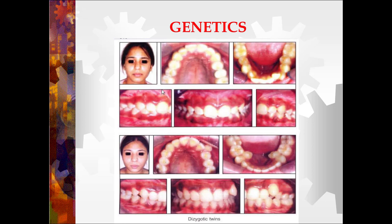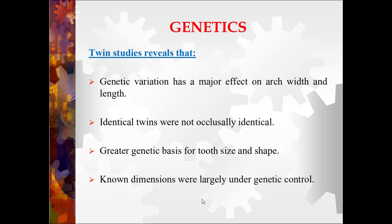This is an example of dizygotic twins: comparing the maxillary arch of both kids, the anterior segment is well aligned in the first but the canine is blocked out in the second. In the mandibular arch, crowding is present in the anterior segment in the first but in the posterior segment in the second. In the vertical plane, deep bite is seen in the first while bite is almost normal in the second — so malocclusion is not identical in dizygotic twins. Twin studies reveal that genetic variation has a major effect on arch width and length; identical twins were not occlusally identical; there is greater genetic basis for tooth size and shape; and bone dimensions were largely under genetic control.